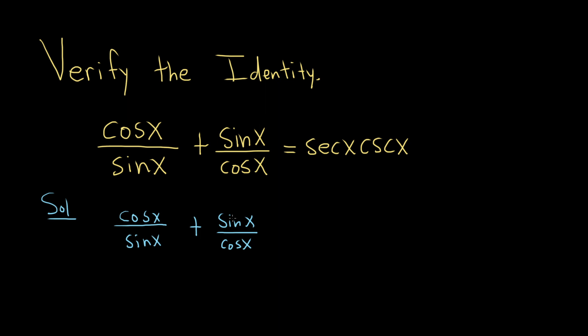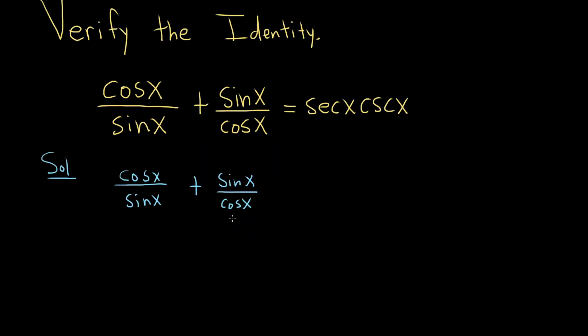And I think the best way to proceed maybe is to actually add these expressions. So the LCD here is going to be sine times cosine. So I'm going to go ahead and write that down. So this is sine x cosine x. This is the fastest way to perform the multiplication. So you know the LCD is just the product of the denominators.